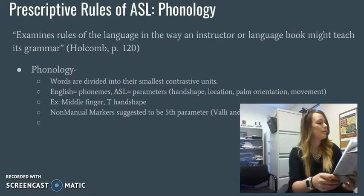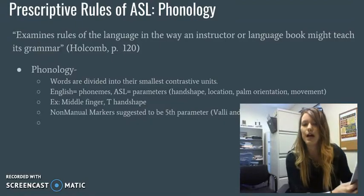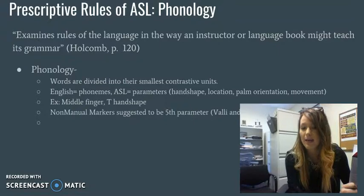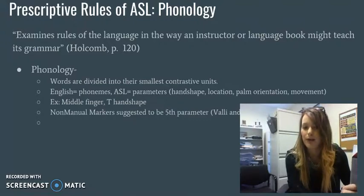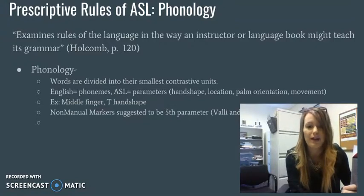There's also the study by Valley and Lucas in 2000 where they made the case that non-manual markers should be considered the fifth parameter. Depending on who you talk to, some people agree with this and some don't. Their case is that the fifth parameter does show the smallest contrasted unit, and that with or without non-manual markers can make a sign correct or incorrect — it can make it a different sign depending on what that is.